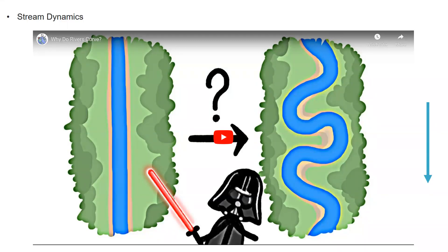So in order to talk about stream dynamics — about how streams move over time — I thought it would be easiest to show a short video on why streams curve and how their shape changes over time. So here goes with the video.